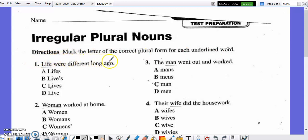Number one, life were different long ago. Is it A, lives? B, lives? C, lives? Or D, live? Mark the correct response now. The correct response is C, lives. Makes most sense. L-I-V-E-S is the irregular plural for the singular noun, life.